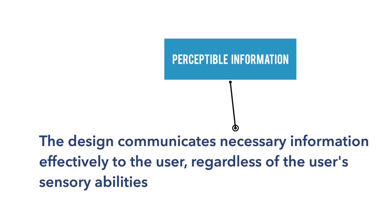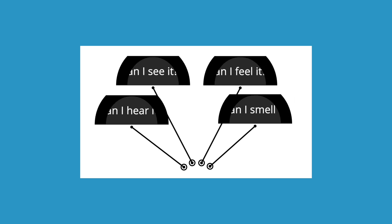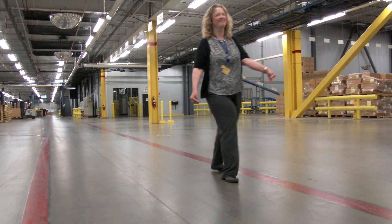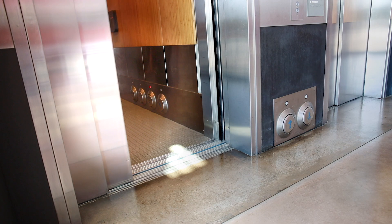The fourth principle of universal design is perceptible information. This means the design communicates necessary information effectively to the user, regardless of ambient conditions or the user's sensory abilities. In other words: can I hear it? Can I see it? Can I feel it? Can I smell it? High-contrast paint on floors and tactile buttons on elevators are examples of this principle.